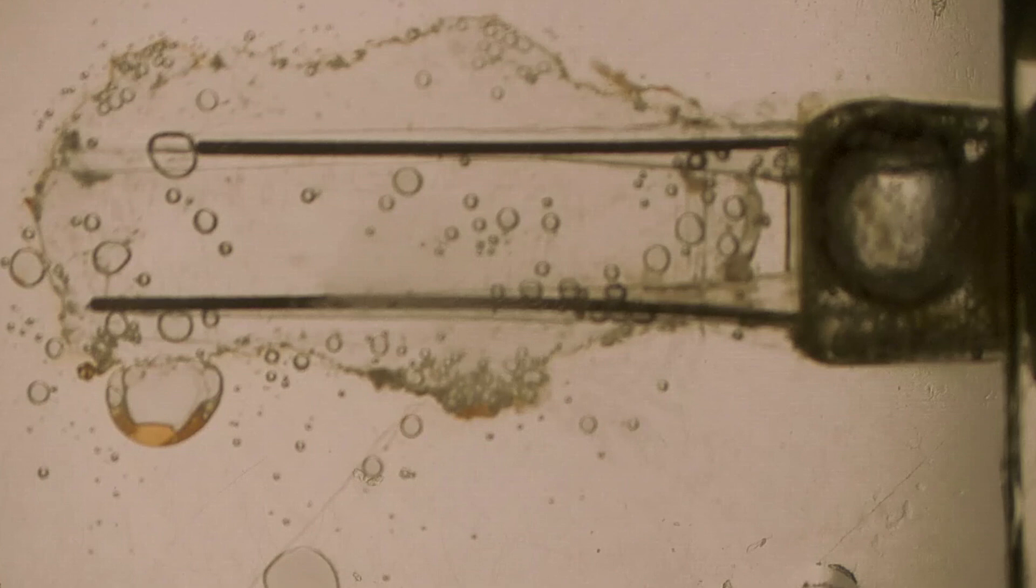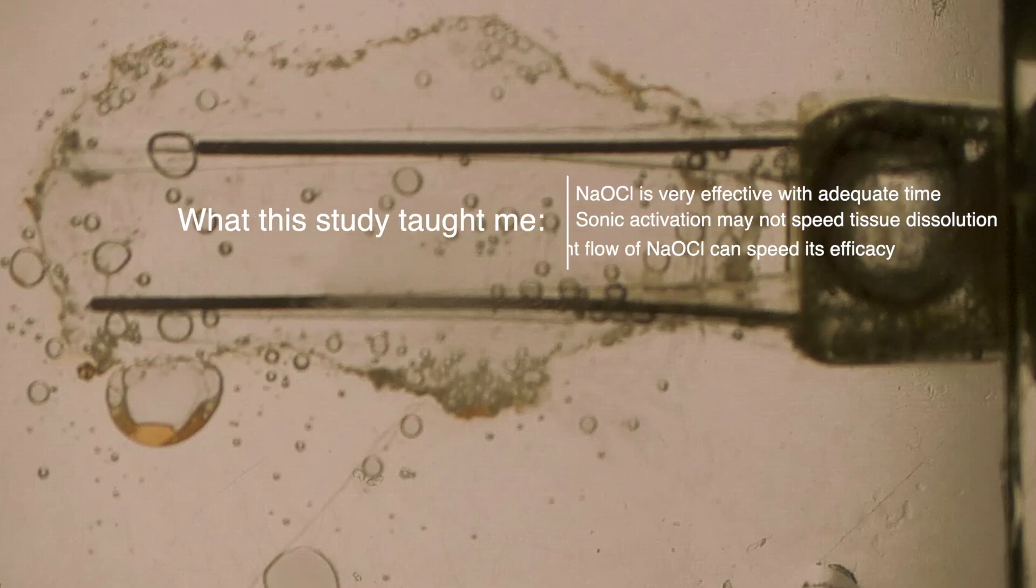And again, this is a test made to be as heinous as I could think of it. It's way easier to kill bugs with hypochlorite than it is to digest pulp tissue out of little tiny lateral areas. What did I learn from the study?